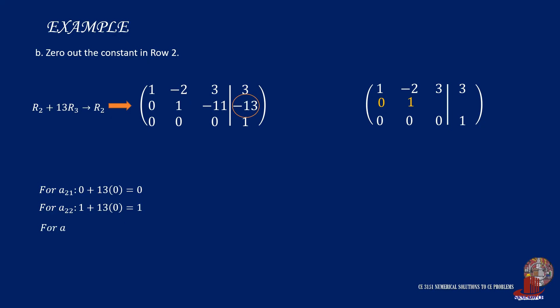Element 2,3 involves negative 11 together with 13 times 0, yielding negative 11. The new constant is negative 13 plus 13 of 1, giving 0.